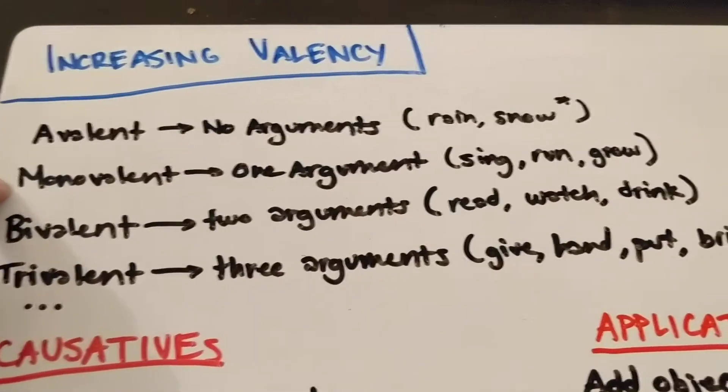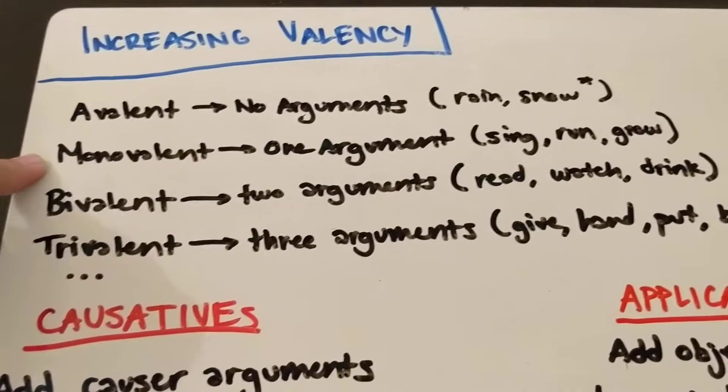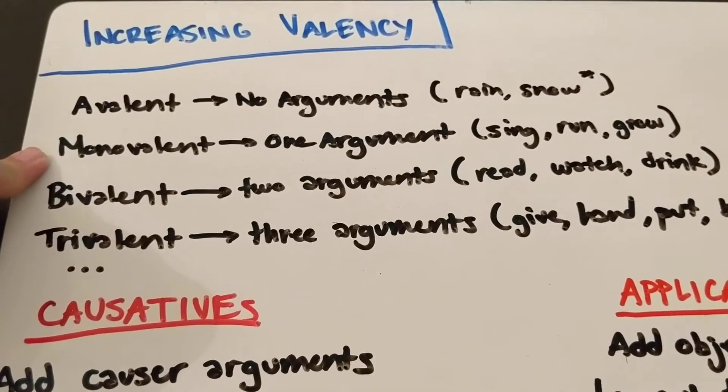Monovalent verbs are things like sing, run, grow. These are intransitive verbs, right, is the other word for these types of verbs.